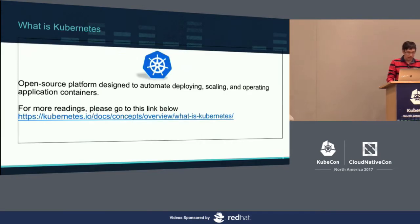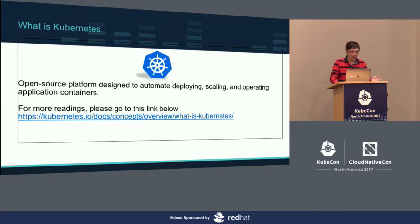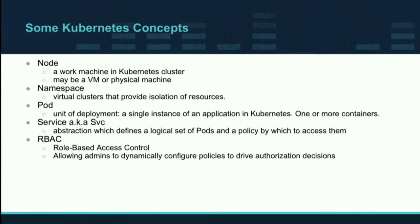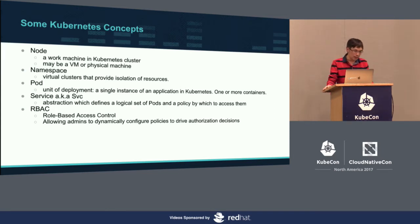I need to introduce some terminology for different audiences. You probably know what Kubernetes is—it's an open source platform designed to automate deploying, scaling, and operating applications. I put a link there; if you're not familiar, go look it up. The reason I'm going through these concepts is because that's how I use RBAC and namespaces to support multi-tenancy.